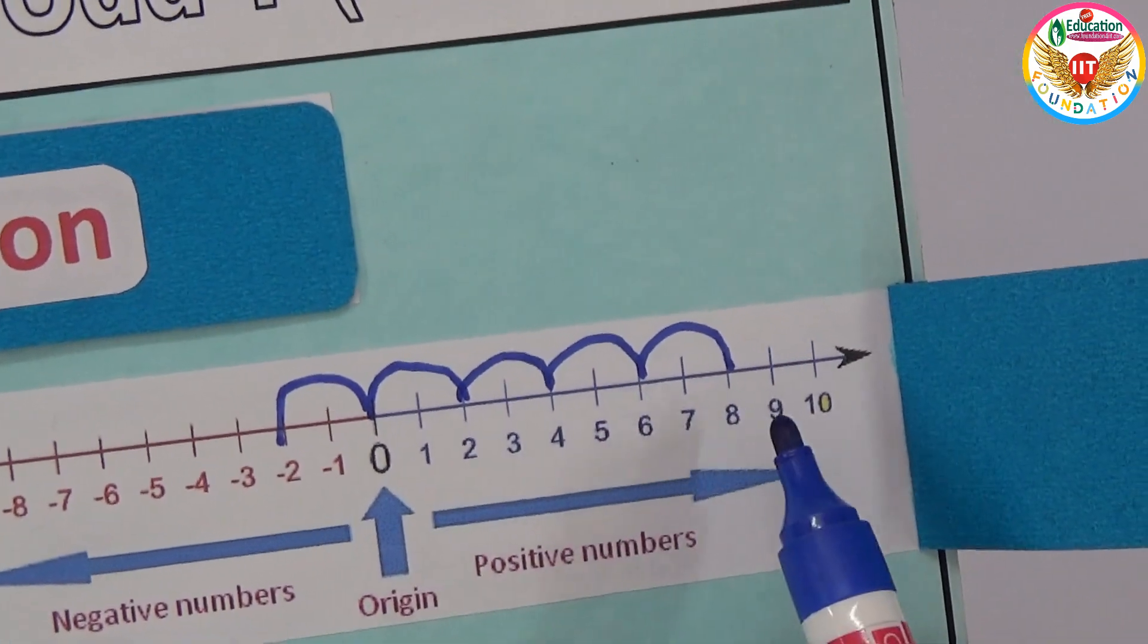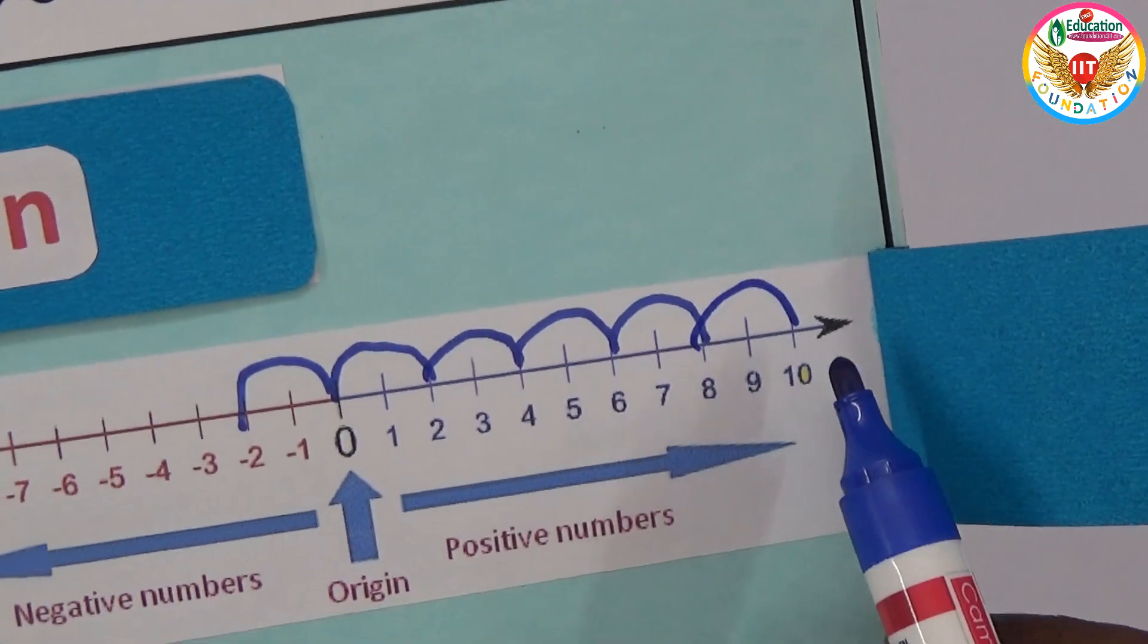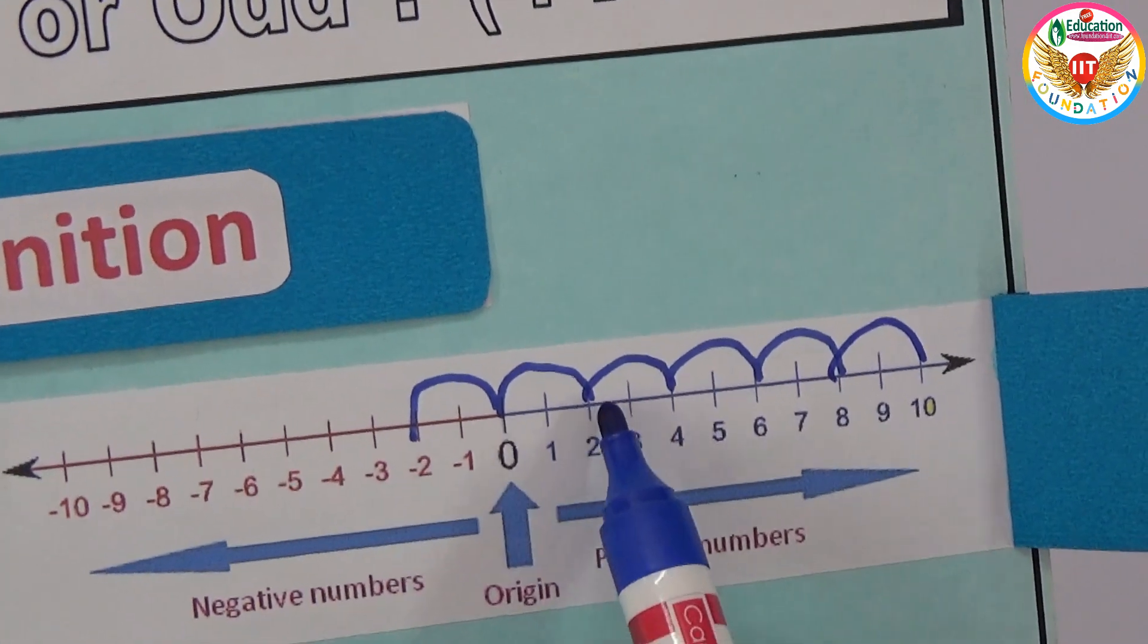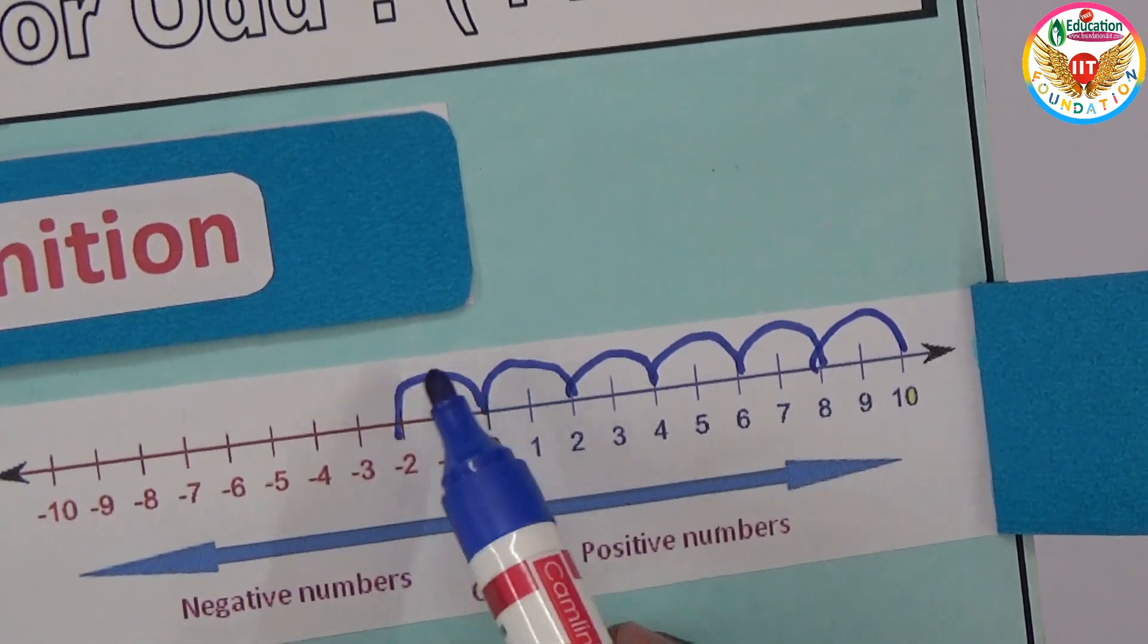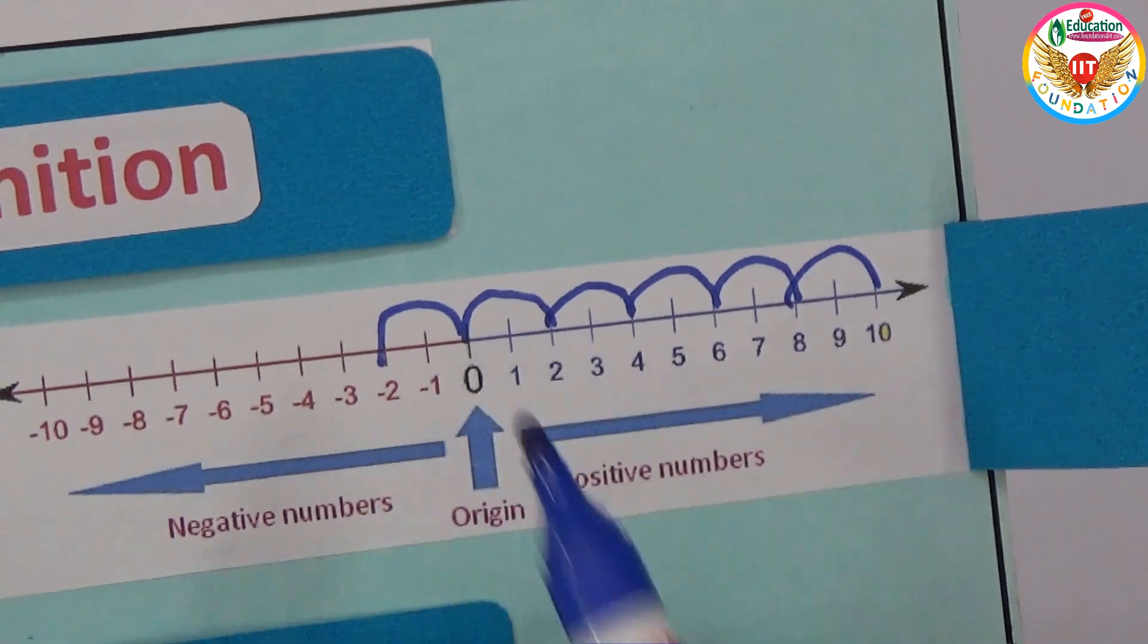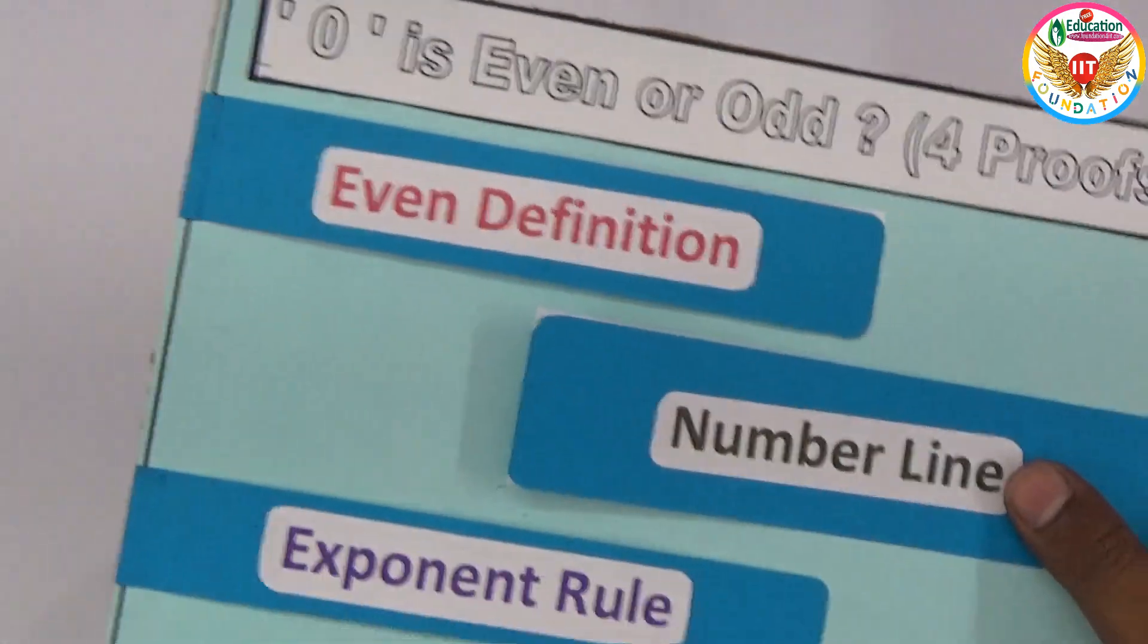Right, we got already two, four, six, eight, ten. Because alternate gaps are even numbers, if you take the left side, after two, the previous is zero, next is minus two. So zero is also an even number based on the number line concept.